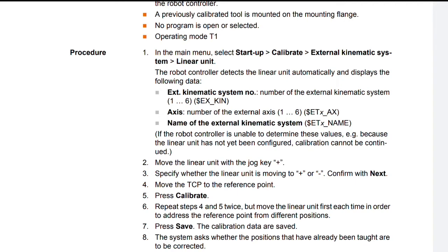Move the linear unit with the jog key plus. Specify whether the linear unit is moving to plus or minus, confirm with Next. Move the TCP to the reference point and press Calibrate.